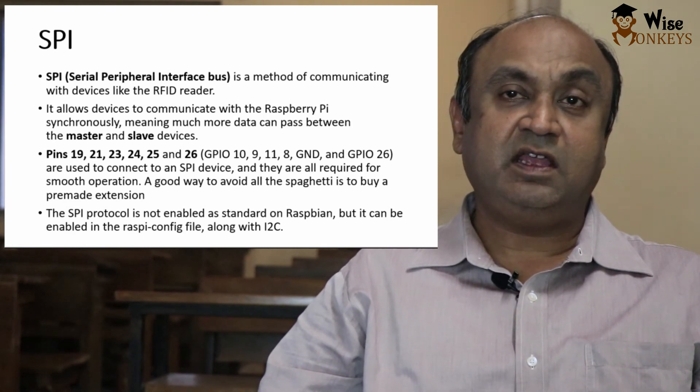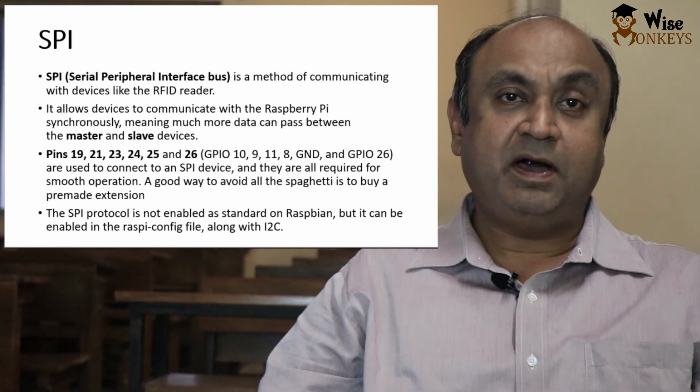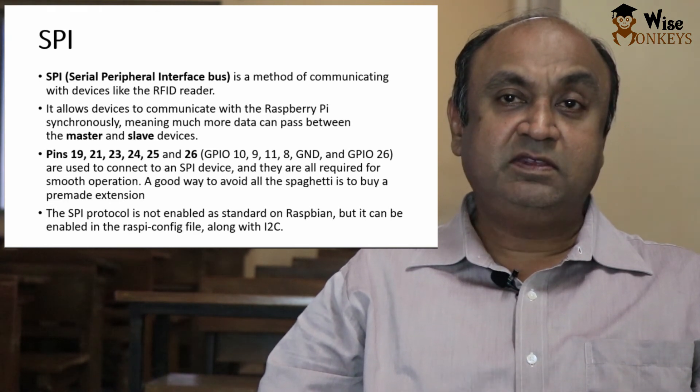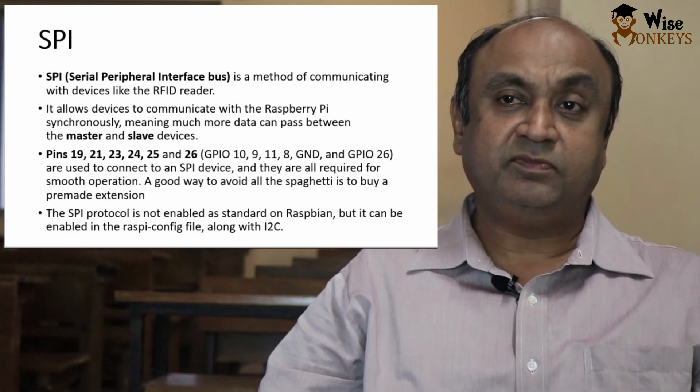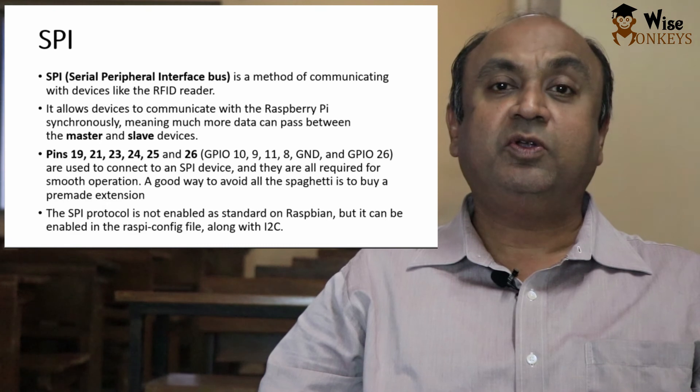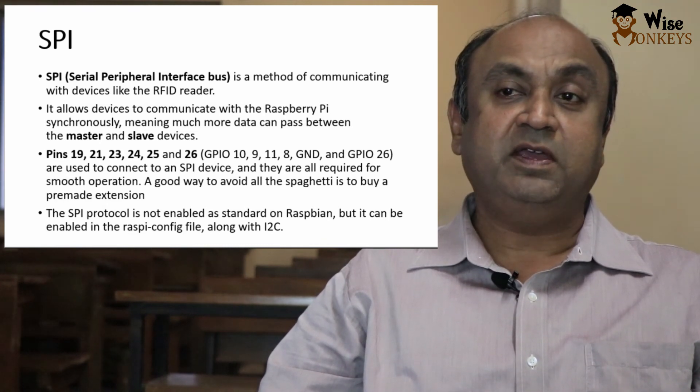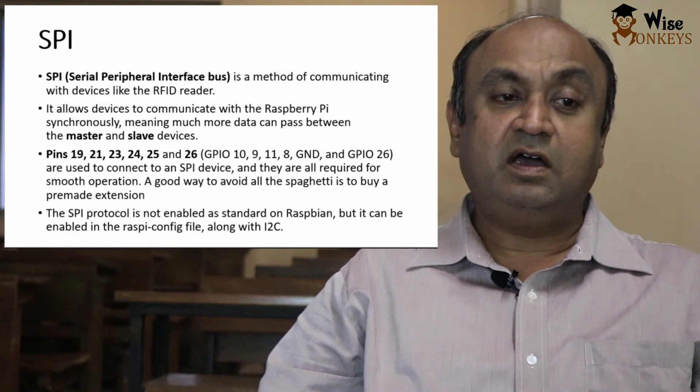SPI. It is a method of communicating with devices like RFID reader. It allows devices to communicate with Raspberry Pi synchronously, meaning much more data can pass between the master and slave devices. Pins 19, 21, 23, 24 and 26 that is GPIO 10, 9, 11, 8, ground and GPIO pin 26 are used to connect SPI device. And they are all required for smooth operation. A good way to avoid all spaghetti is to buy a pre-made extension. The SPI protocol is not enabled as standard on Raspbian, but it can be enabled in Rasppy config file along I2C.